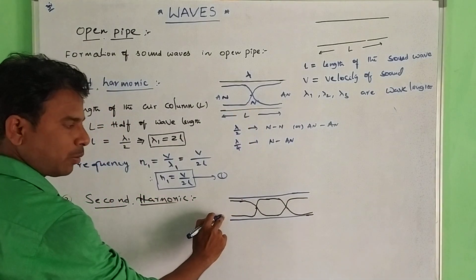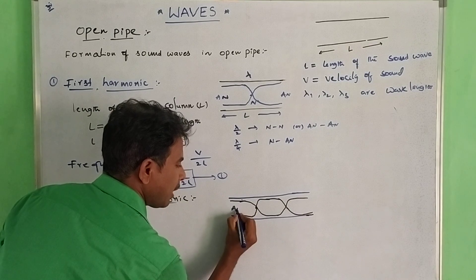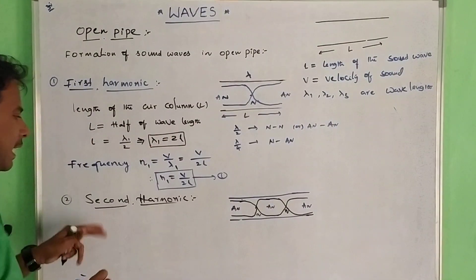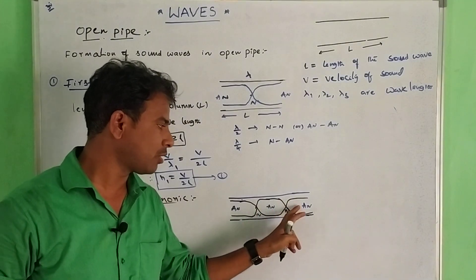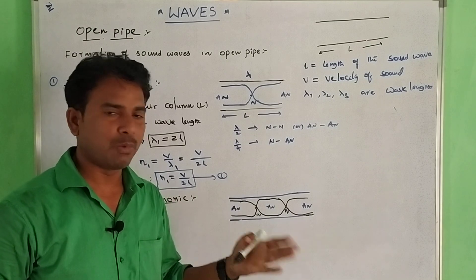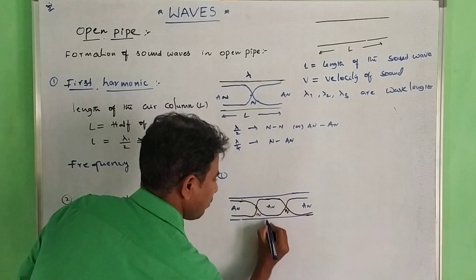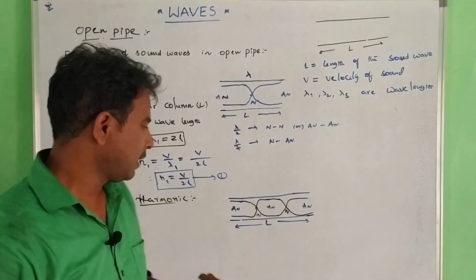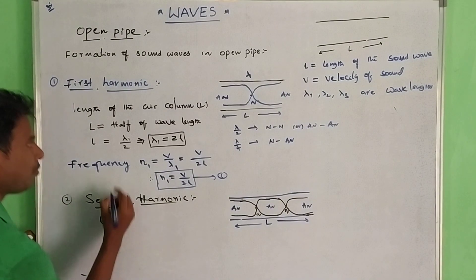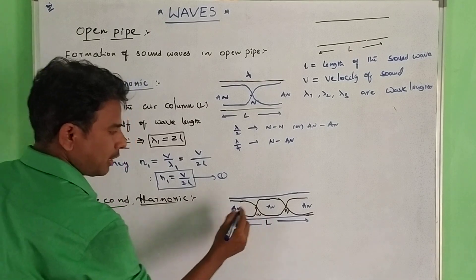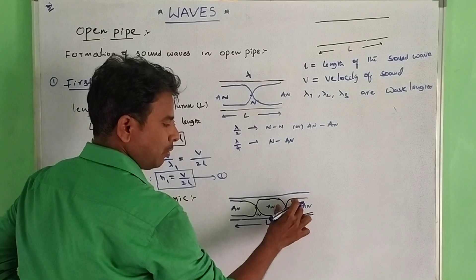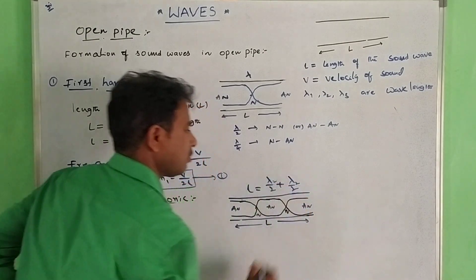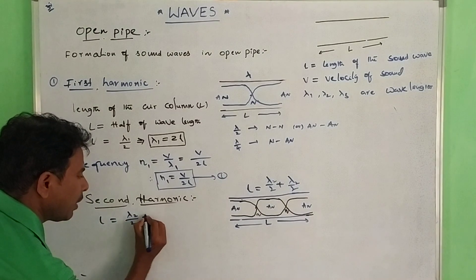In the second harmonic diagram, this one is antinode, this one is antinode, this one is antinode, these are the nodes. The length L equals lambda 2 / 2 + lambda 2 / 2, which gives L = 2 × (lambda 2 / 2). Therefore, lambda 2 = 2L / 2 = L.